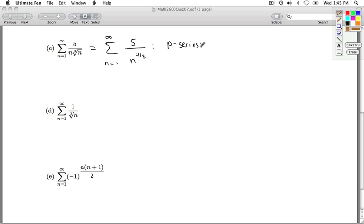This is a P series. P equals 4 thirds. And what's important about that, it's greater than 1. So the series converges.